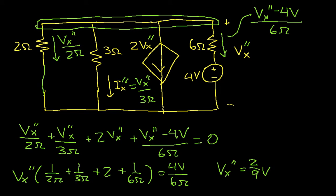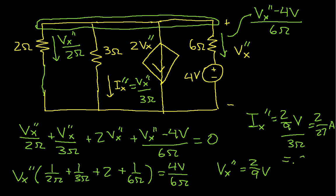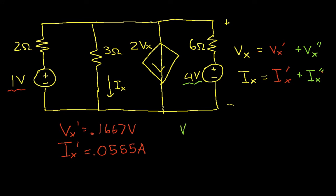Ix double prime is 2/9 volts divided by 3 ohms, which equals 2/27 amps, or approximately 0.0741 amps. Vx double prime is approximately 0.2222 volts. Going back to the original circuit, we record Vx double prime = 0.2222 volts and Ix double prime = 0.0741 amps.